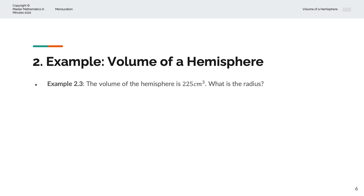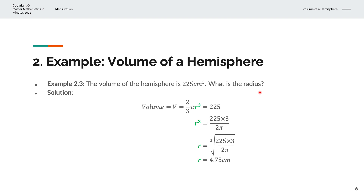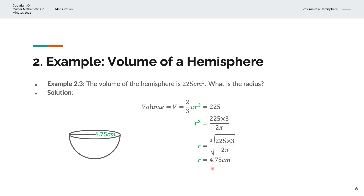In the third example, we are given that the volume of the hemisphere is 225 centimetres cubed, and we are asked to find the radius. We set V = 2/3 × π × r³ equal to 225, and solve for r³, giving r = (225 × 3) / (2π), and so r equals 4.75 centimetres. Visually, we have a hemisphere with a radius of 4.75 centimetres.